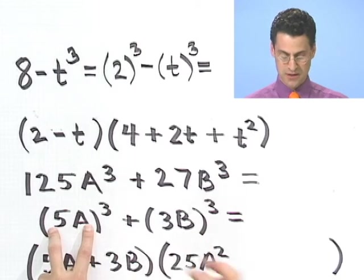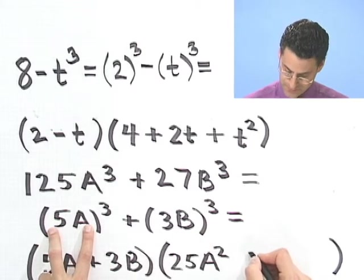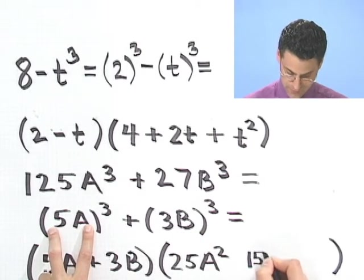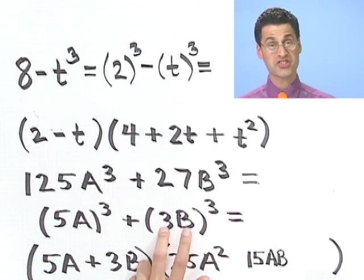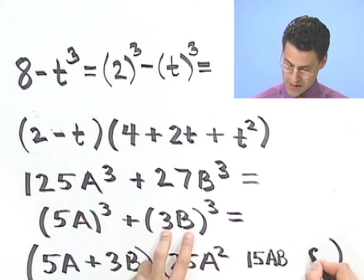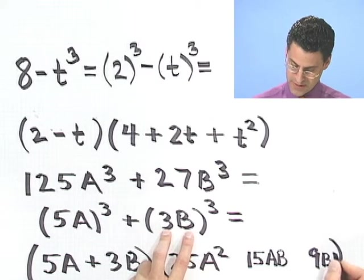I'm sorry, the product of these things. So it's going to be 15ab. And the last term is going to be this squared, which is going to be 9b squared.